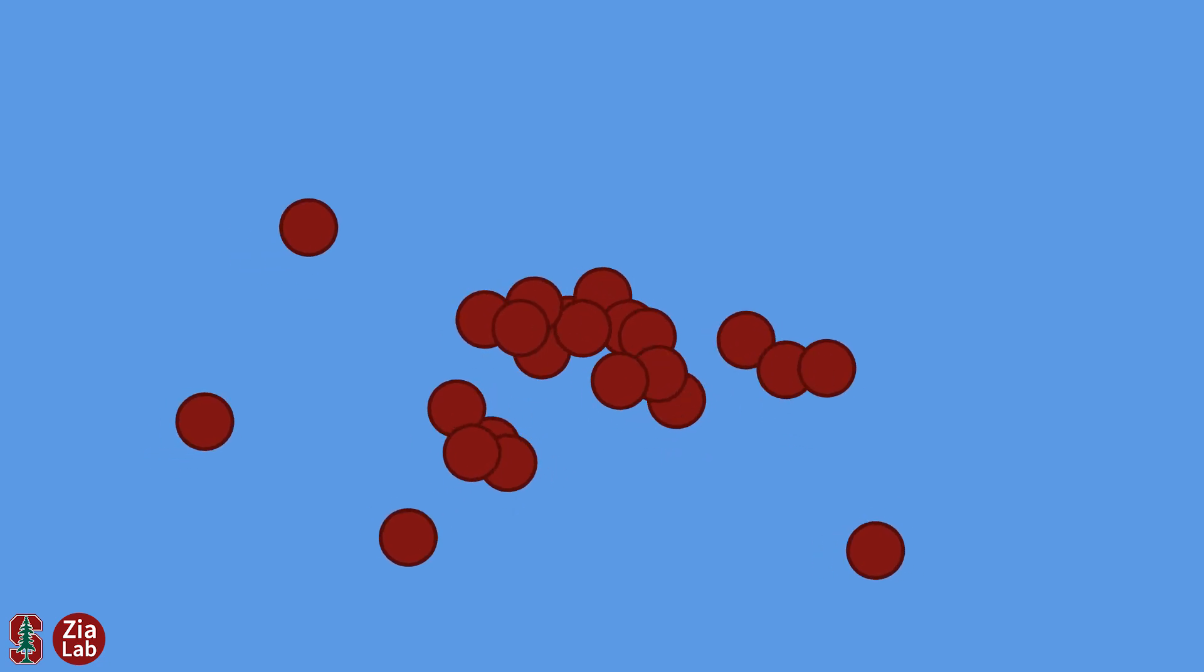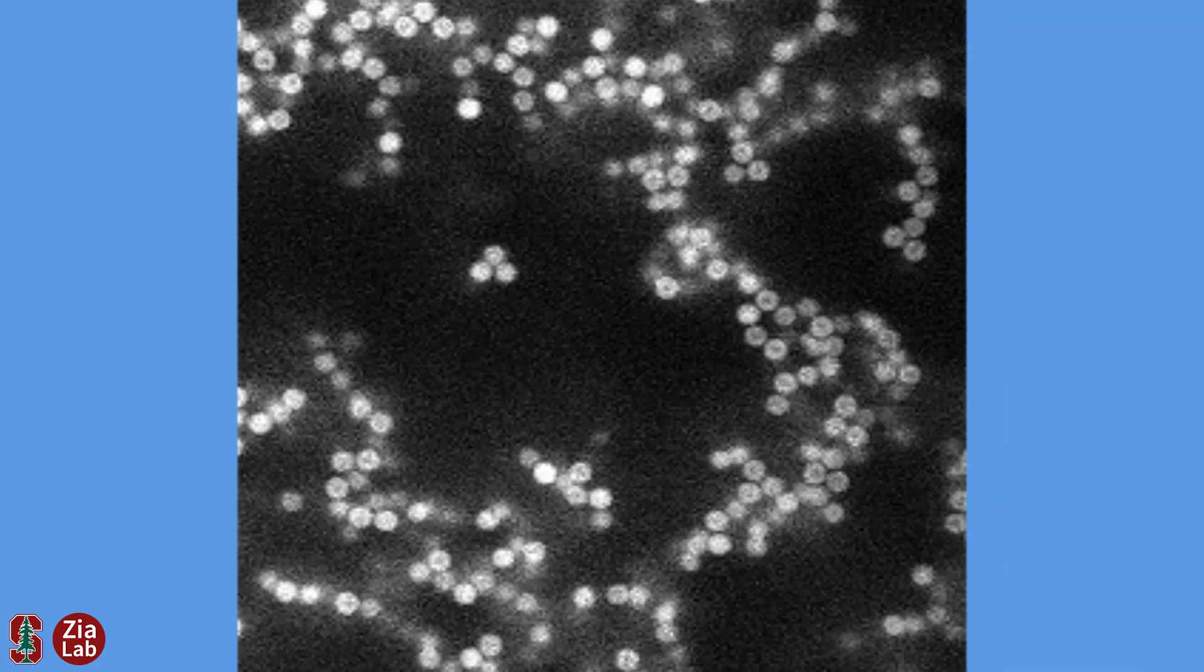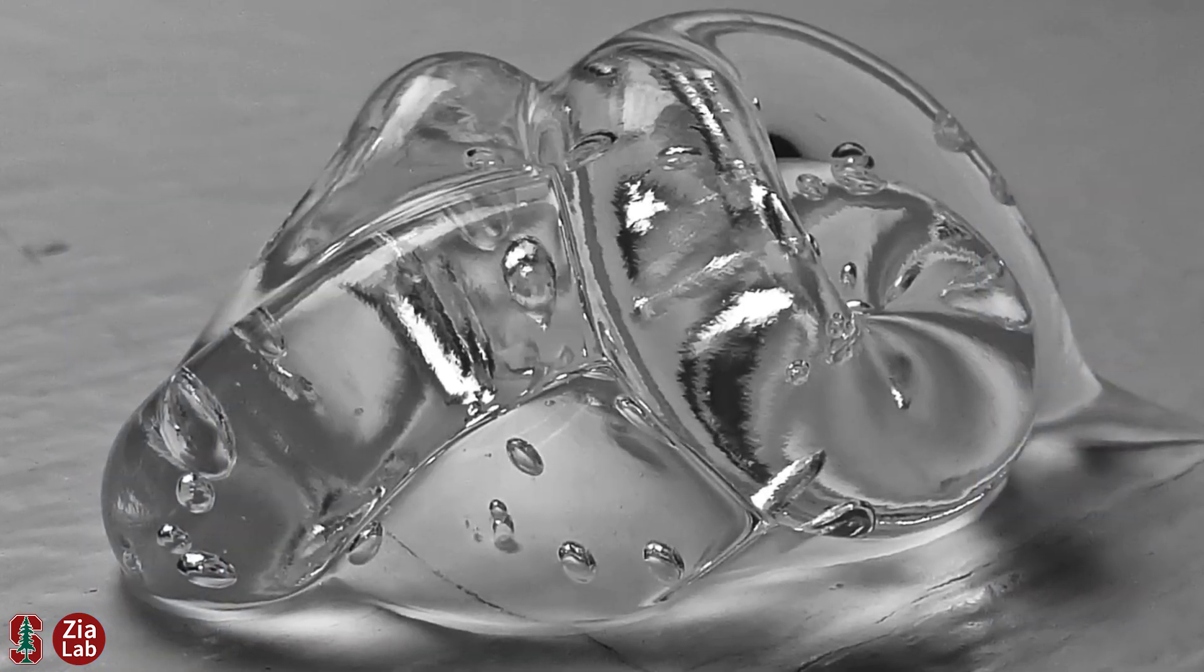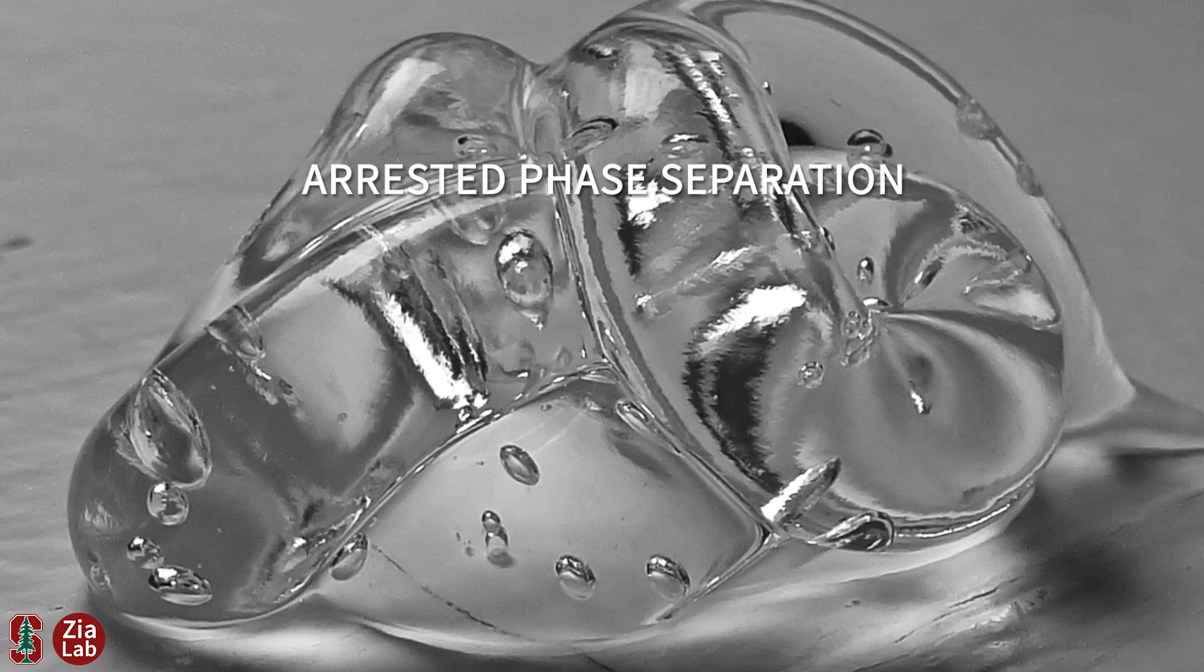But this phase separation can get interrupted. Attractive forces hinder the colloids as they phase separate, bonding them together into a network, and thereby creating a gel. We often refer to these gels as an example of arrested phase separation.